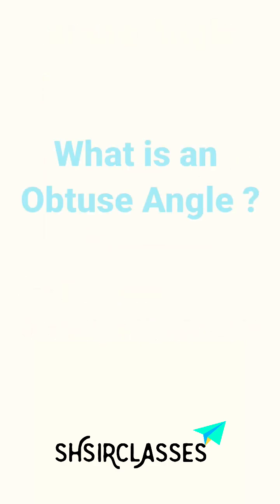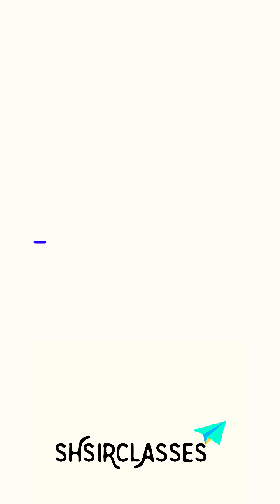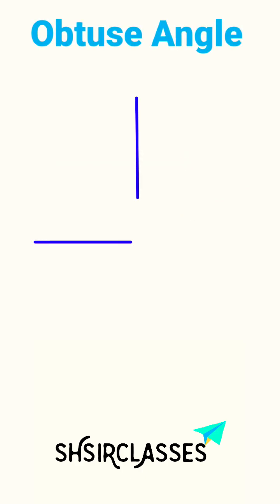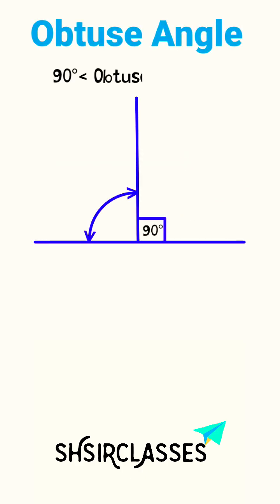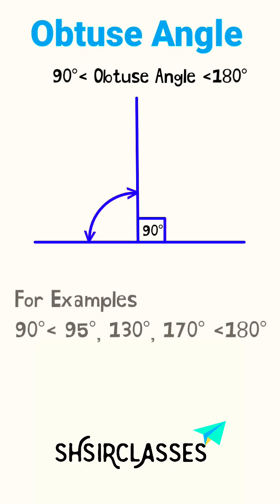Next, what is an obtuse angle? An angle is said to be obtuse if the angle is greater than 90 degrees and less than 180 degrees. For examples: 95 degrees, 130 degrees, and 170 degrees.